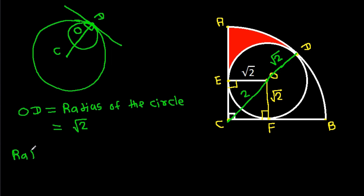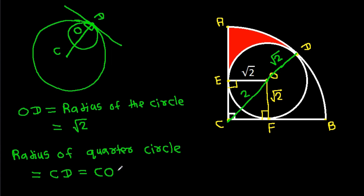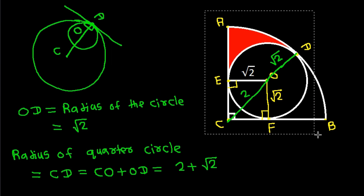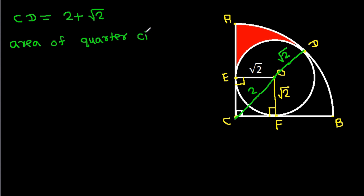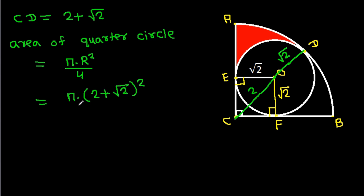The radius of the quarter circle will be equal to CD, which equals CO plus OD. That is 2 plus square root of 2. So we have CD equals 2 plus square root of 2.